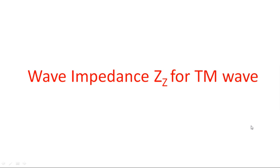Hi everyone. In this video I am going to derive the wave impedance Z_TM for TM waves. In the previous video I explained the wave impedance Z_TE for TE waves, where we took E_Z equal to zero. A similar method will be followed here, but we will consider H_Z equal to zero since it is a TM wave.